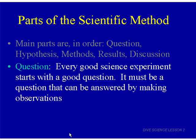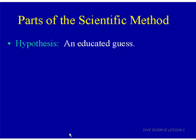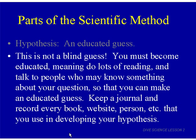That's what you do when you do the scientific method — you're applying it to an experiment. You start with a question and then come up with a hypothesis, an educated guess to what you think the answer might be. It's not a blind guess — you have to become educated. That means doing a lot of reading and talking to people who may know something about your question. Keep a journal and record every book, website, and person you use in developing your hypothesis.